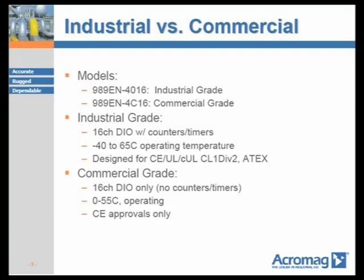The Model 989EN-4C16 commercial grade instrument is simply a basic 16-channel Ethernet discrete I/O module. It does not include any counters, timers, alarms, or hazardous location approvals. The continuous operating temperature for the 4C16 unit is rated at 0 to 55 degrees Celsius. This unit is ideal for OEMs, commercial, and light industrial markets and industries.